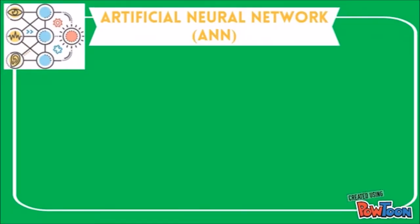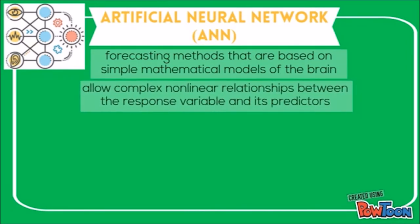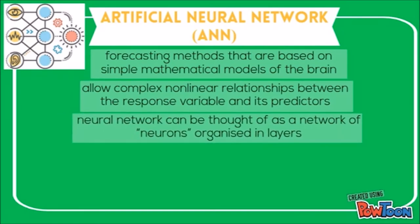Artificial neural networks (ANN) are forecasting methods that are based on simple mathematical models of the brain. They allow complex non-linear relationships between the response variable and its predictors. A neural network can be thought of as a network of neurons organized in layers.